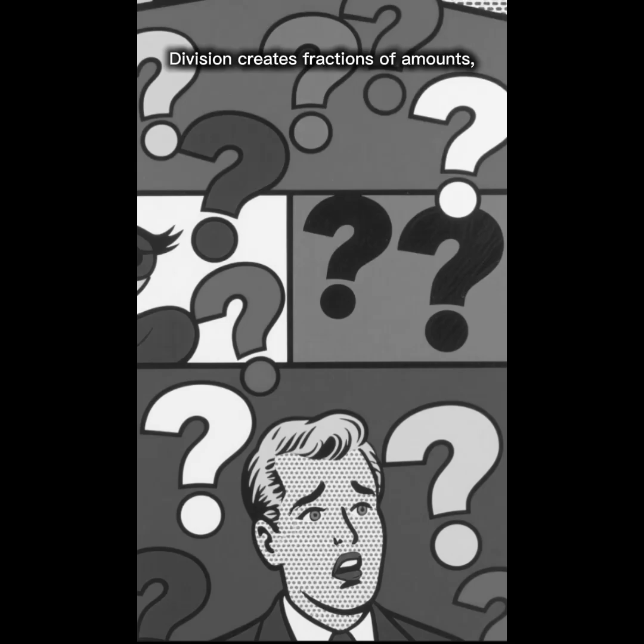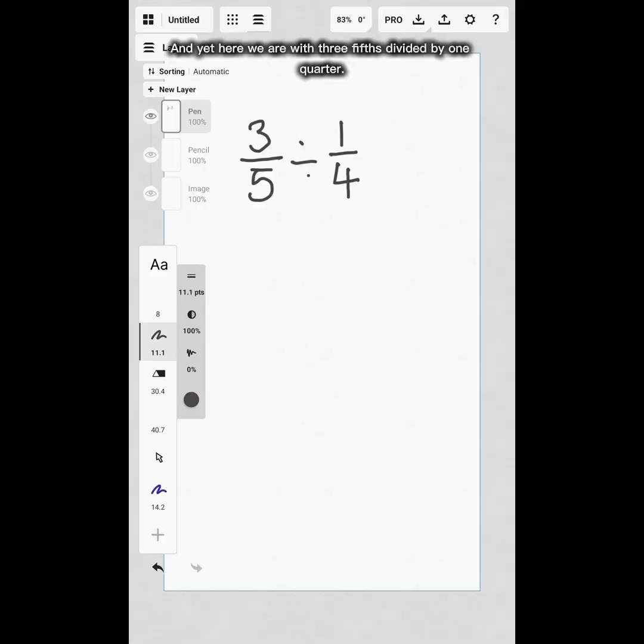Division creates fractions of amounts, so dividing fractions with fractions seems counterintuitive. And yet here we are with 3/5 divided by 1/4. We are basically saying how many quarters in 3/5. With fractional division, we have a finger-licking good